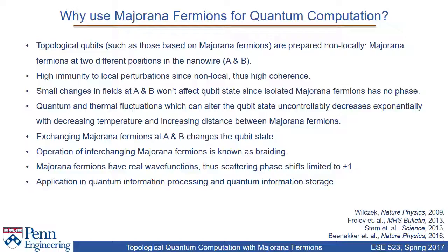Thus, these devices would function only at low temperatures, and longer nanowires would make the system more immune to disturbances. Exchanging Majorana fermions between positions A and B changes the qubit state — this interchange is known as braiding. Braiding of Majorana fermions is the basis of qubit operations in such a system. Since Majorana fermions have real wave functions, scattering phase shifts are limited to plus or minus one, unlike other qubit systems which have complex wave functions and thus random phase shifts. The applications involve quantum information processing and quantum information storage.